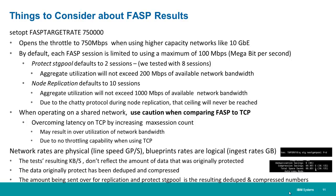Some things to consider about FASP results: we use SetOpt FASP target rate 750,000 to open the throttle to 750 megabits per second for higher-capacity networks like 10-gigabit Ethernet. By default, each FASP session is limited to a maximum of 100. Protect Storage Pool defaults to two sessions, but we tested with eight, improving aggregate utilization. Node replication defaults to 10 sessions. Use caution when comparing FASP to TCP, because overcoming latency on TCP by increasing max session count might result in over-utilization of network bandwidth due to no throttling capability with TCP.